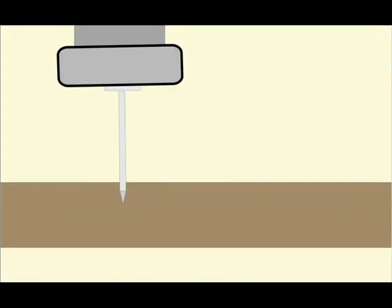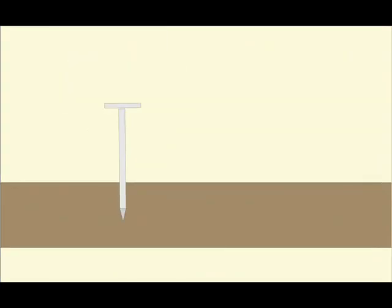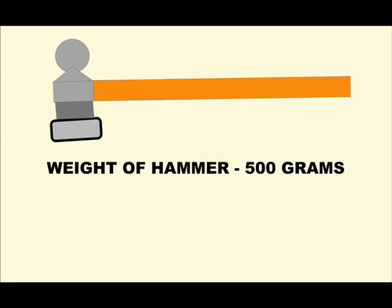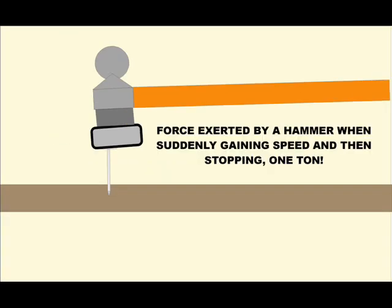It is similar to accelerating a hammer and then having it suddenly stopped when hitting the nail. All energy accumulated during this stroke is released in a very short distance and then the force is multiplied many times. A hammer normally weighing about 500 grams releases on the nail a momentary force of up to a ton.